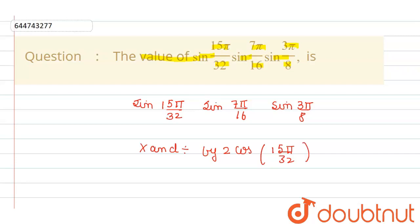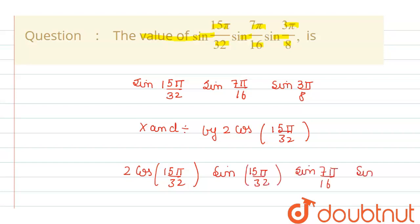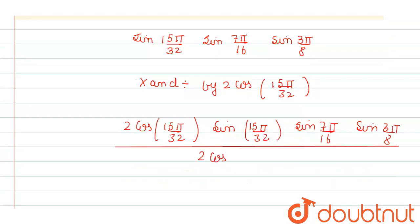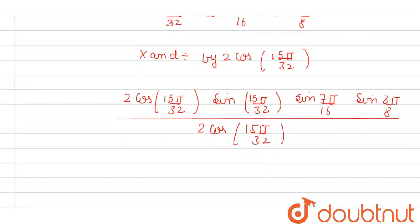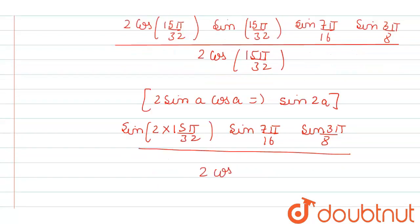We are doing that so it will become a trigonometric formula. Our term will become 2cos(15π/32)·sin(15π/32)·sin(7π/16)·sin(3π/8) divided by cos(15π/32). In the numerator we are making the formula 2sinA·cosA = sin2A. So our term becomes sin(2×15π/32)·sin(7π/16)·sin(3π/8) divided by cos(15π/32).